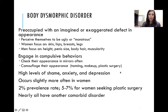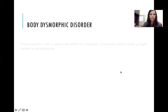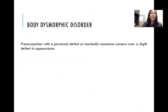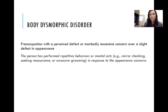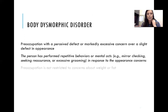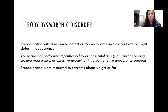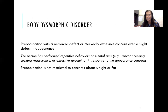The DSM-5 criteria for body dysmorphic disorder: preoccupation with a perceived defect or markedly excessive concern over a slight defect in appearance. The person has performed repetitive behaviors or mental acts — mirror checking, seeking reassurance, or excessive grooming — in response to appearance concerns. The preoccupation is not restricted to concerns about weight or fat; if it were, you'd be looking at an eating disorder.